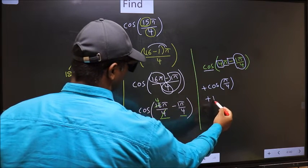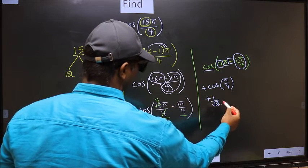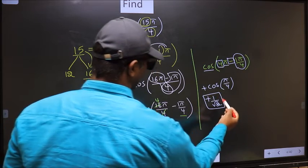So plus cos(π/4) is 1/√2. This is our answer.